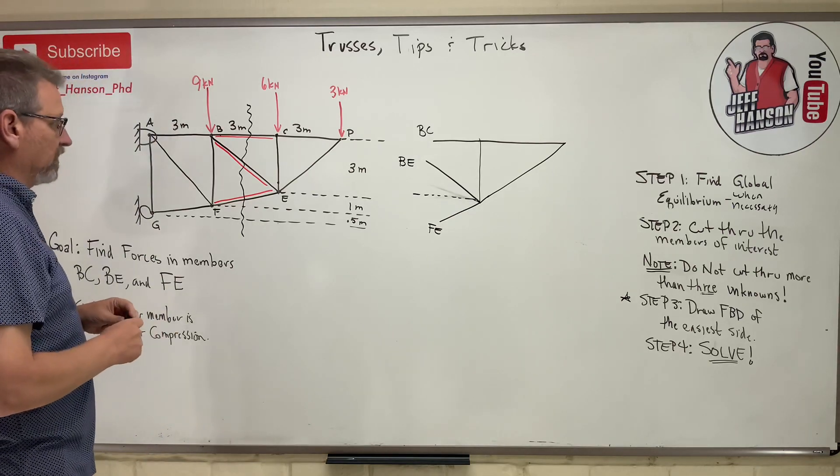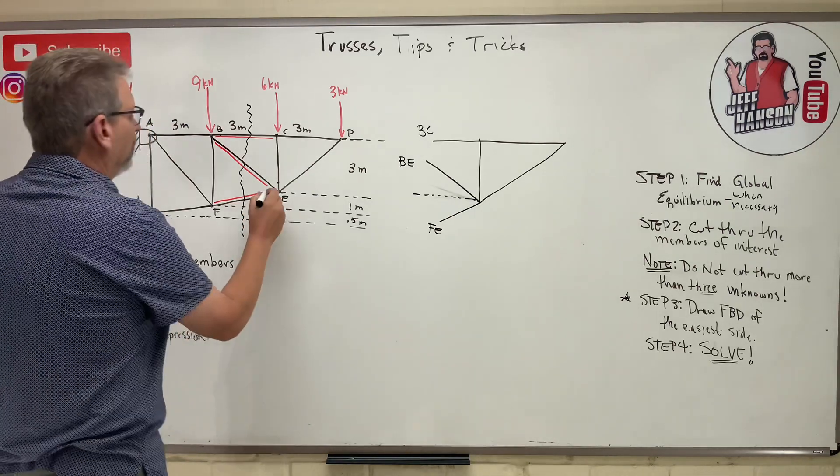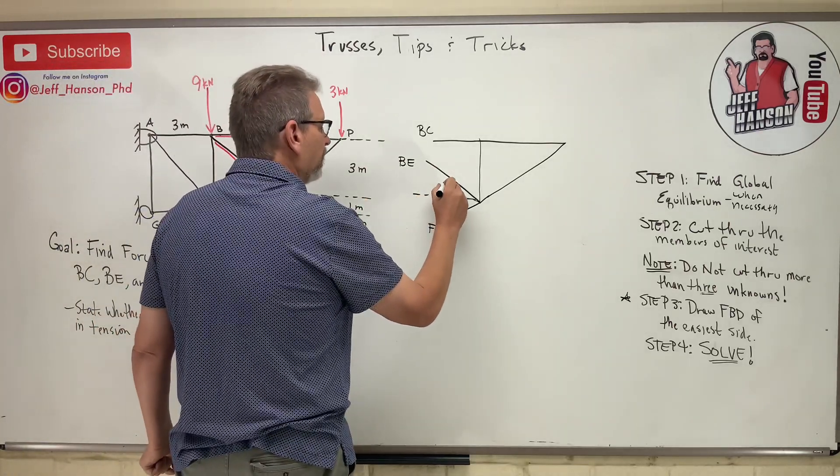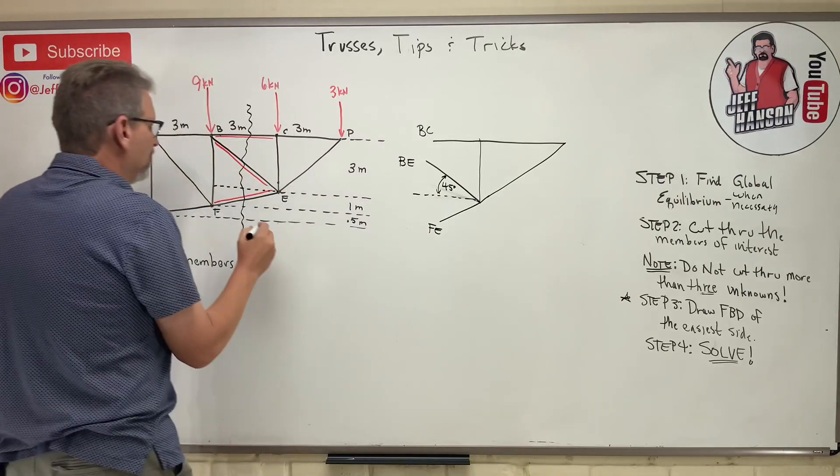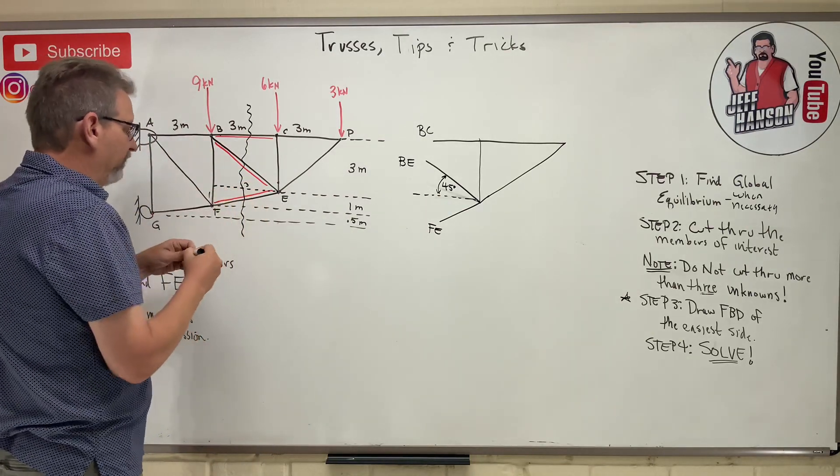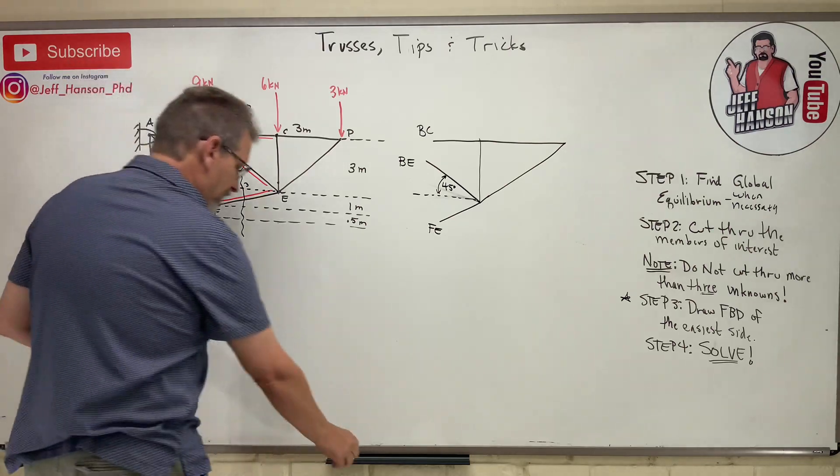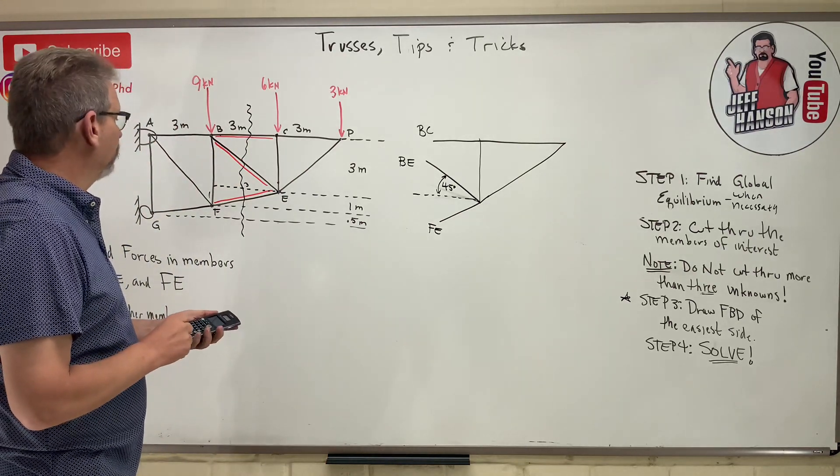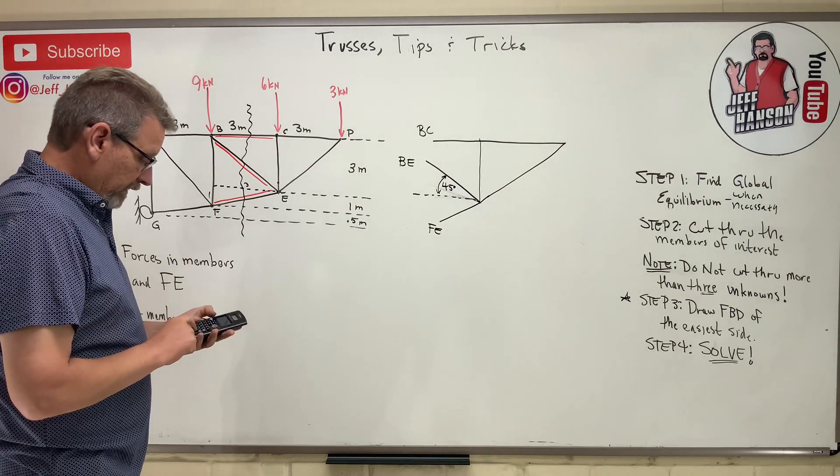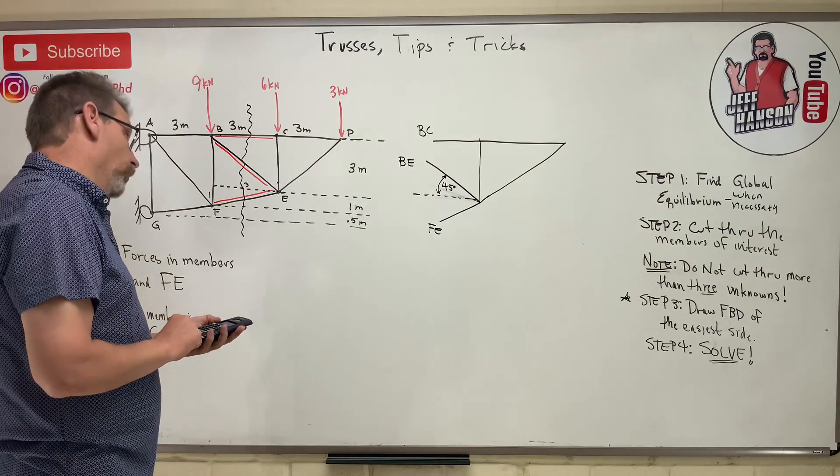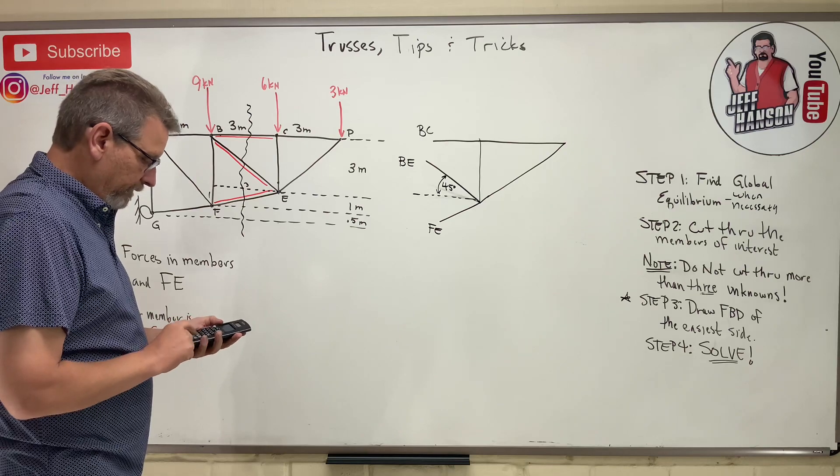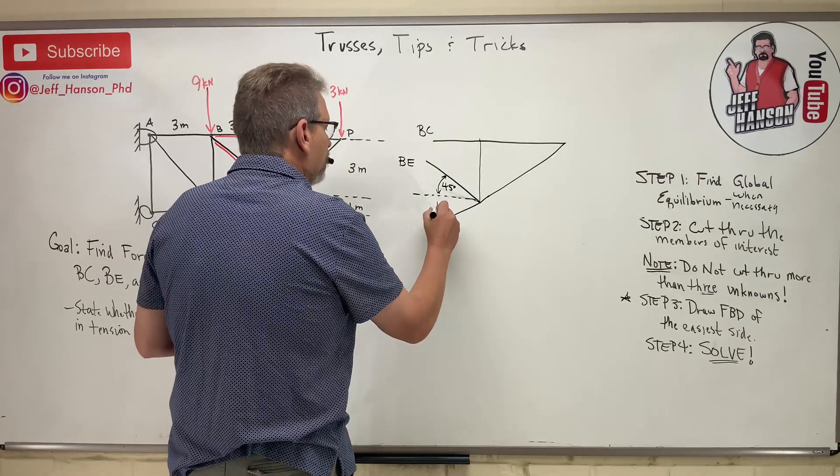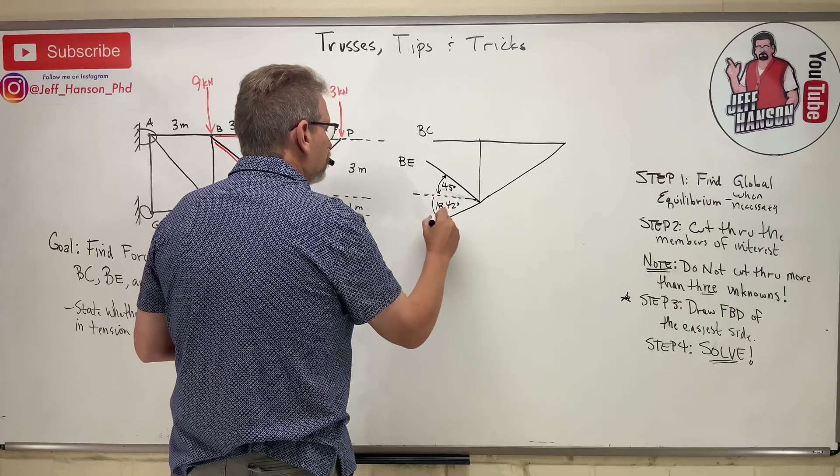Now, I think before we get started, let's do some angles. So I'm just going to make myself a couple of triangles here. Well, this triangle is three this way and three that way. So that is 45 degrees. And then this little triangle right here is three on this side and one on that side. So we're going to have to do the tangent on that guy. Let's see what we get here. Inverse tan, one over three is 0.333. And that's 18.42 degrees.